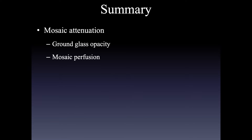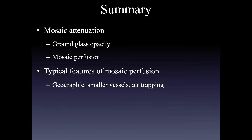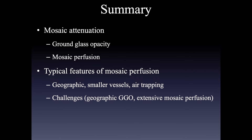In summary, mosaic attenuation can be due to ground glass opacity — opaque lung abnormal — or mosaic perfusion — lucent lung abnormal. Typical features suggesting mosaic perfusion include the very geographic nature of the lucent lung with very sharp borders, smaller vessels in the lucent lung, bigger vessels in the more opaque lung, and when due to airways disease, air trapping on expiratory CT in the same places that are lucent on the inspiratory CT. Challenges include geographic ground glass, particularly with viral infection, and as mosaic perfusion becomes more extensive, the greater density difference can make you think you're dealing with ground glass. When mosaic perfusion is diffuse, there is no normal lung with which to compare, making it even more challenging.